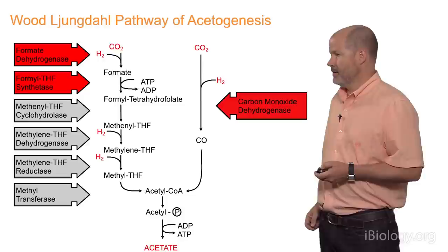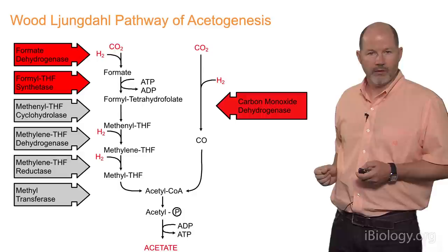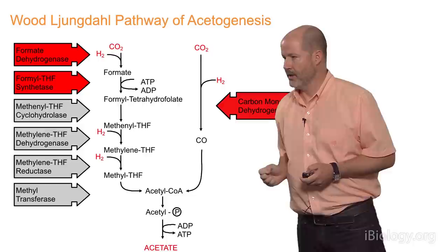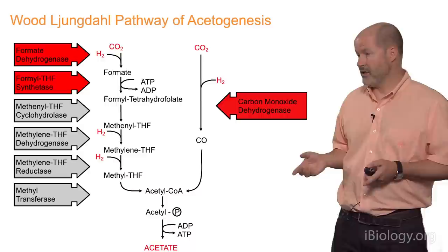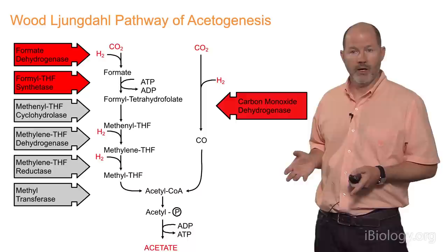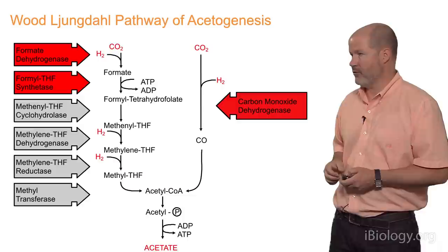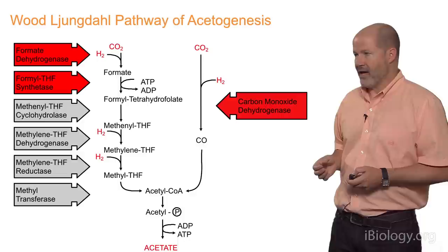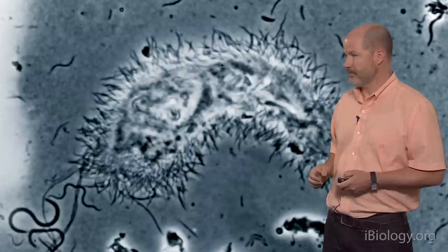CO2 reductive acetogenesis is a bacterial activity. The process involves the fixation of two molecules of carbon dioxide with four molecules of hydrogen, where those two carbons are joined and reduced to form acetate. This metabolism yields energy for the bacteria performing it, in addition to yielding acetate that can be used by the insect. It's a mutually beneficial metabolism that takes hydrogen produced during fermentation, turns it into additional fuel for the insect, meanwhile supporting the bacteria that perform it. For years, we did not have a good understanding about what bacteria in the termite are actually catalyzing this process.